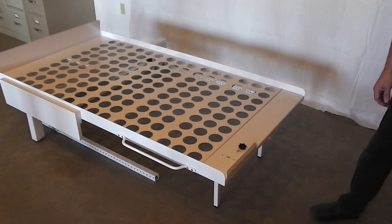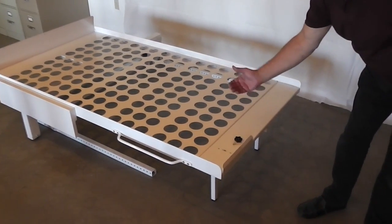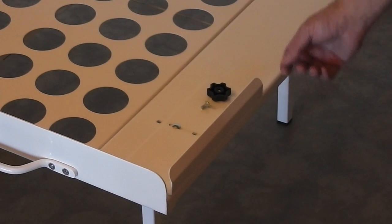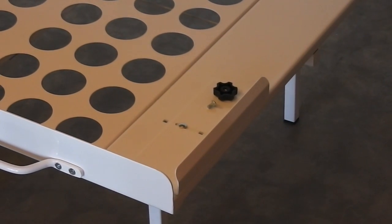The next step is to attach the mattress clamp to the top of the platform. Please notice how the carriage bolt goes down through and the knob comes up from the bottom to tighten it.